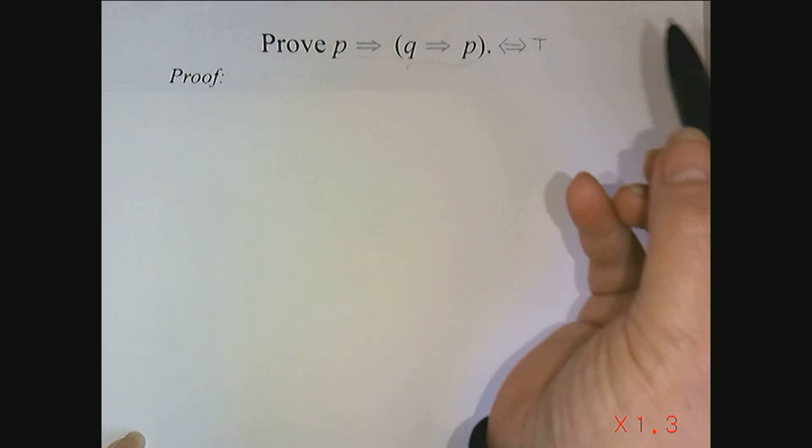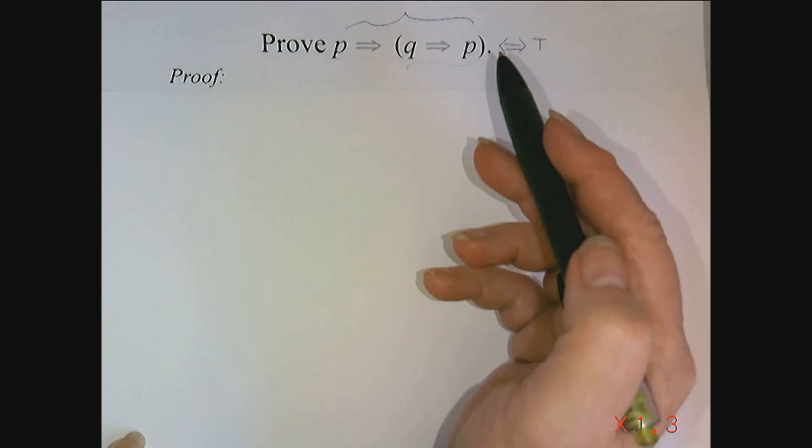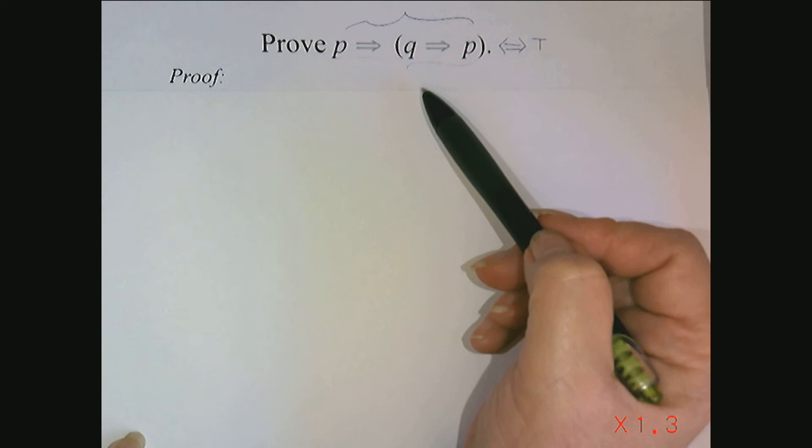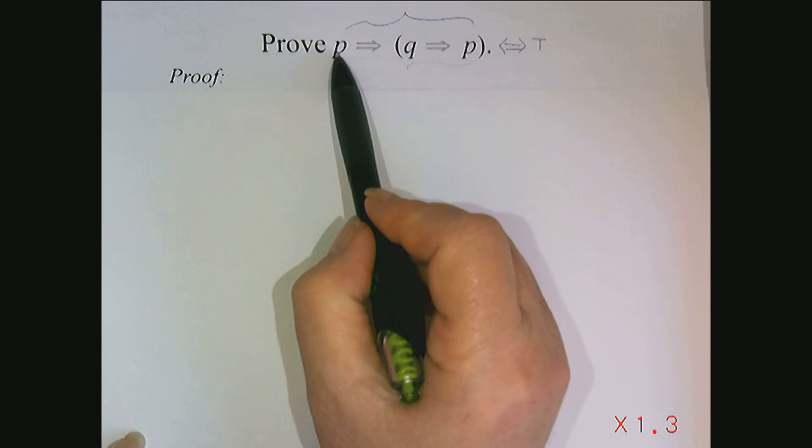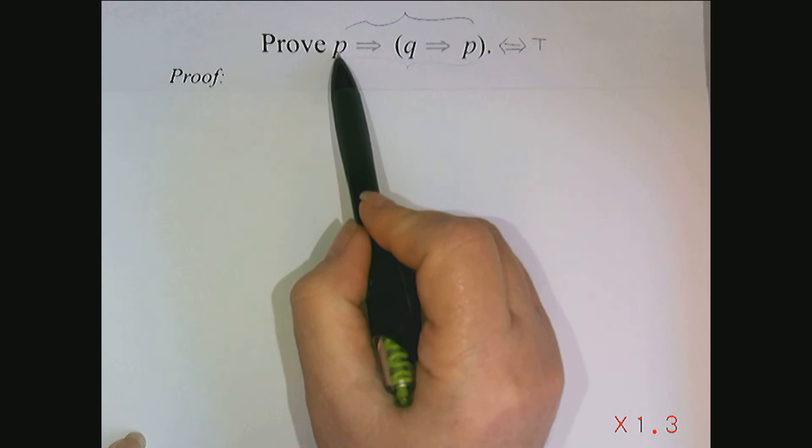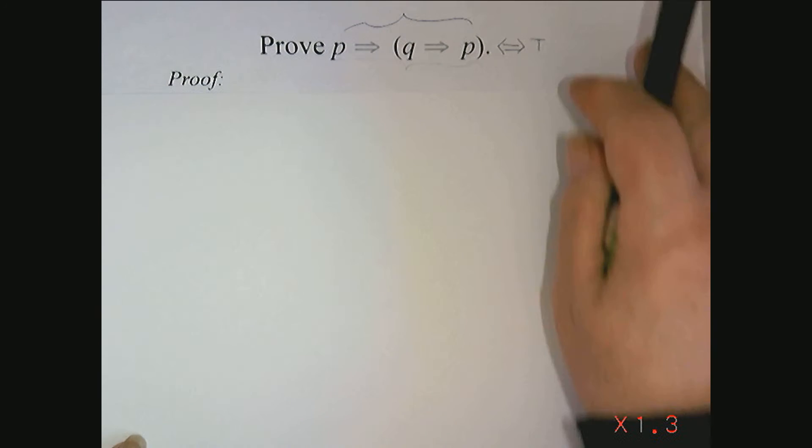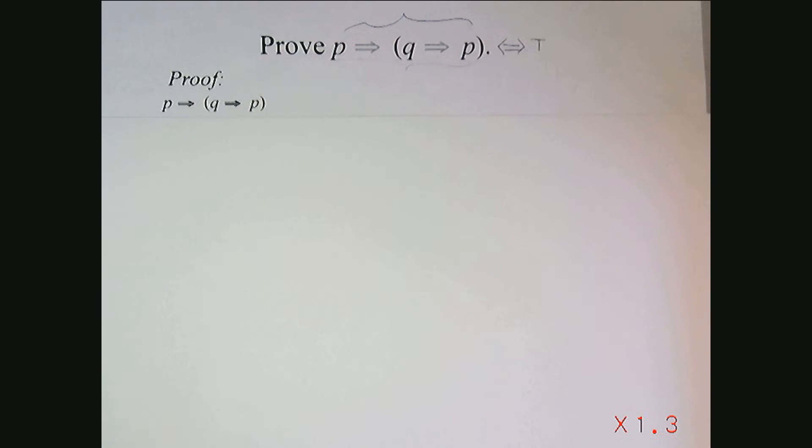So what I need to do is look at this entire expression and use my basic equivalences to show that this simplifies, or I can manipulate it, so that it's just the predicate true. So, I'm going to start with the entire predicate. First step.